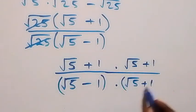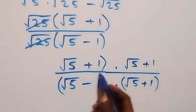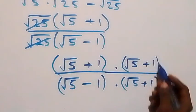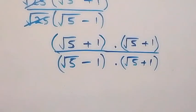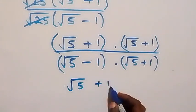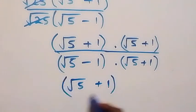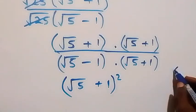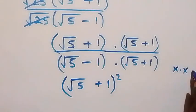We have root 5 minus 1 in the denominator. In the numerator we have root 5 plus 1 times root 5 plus 1, which we can write as root 5 plus 1 squared. From here, when we have x times x, that is the same as x squared.